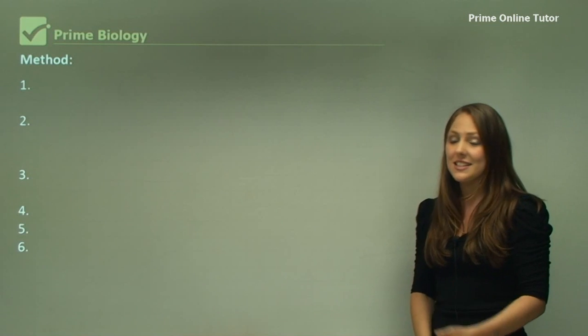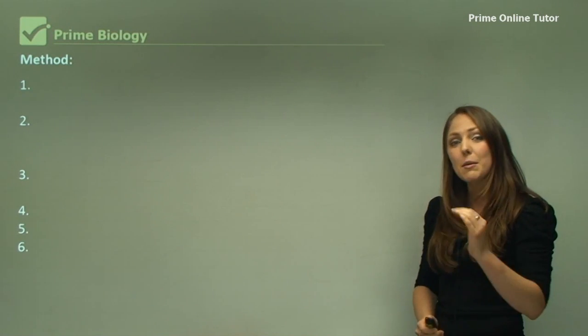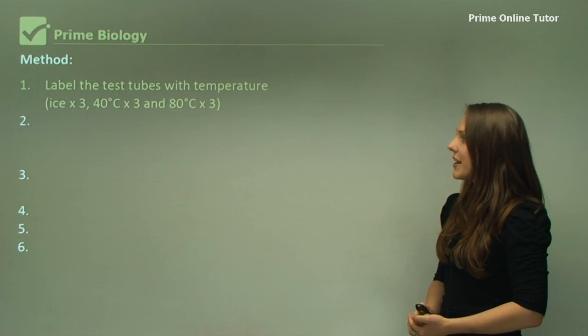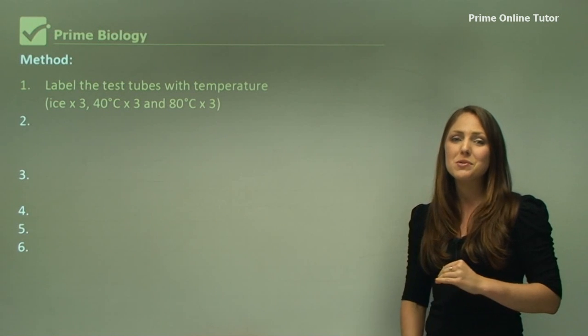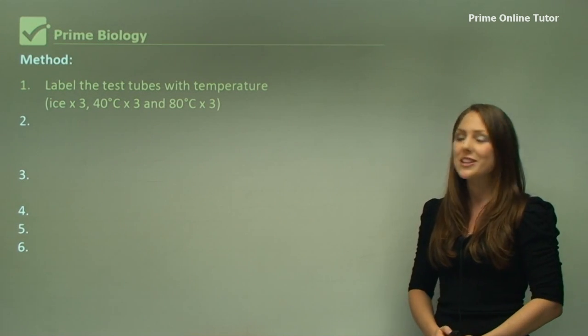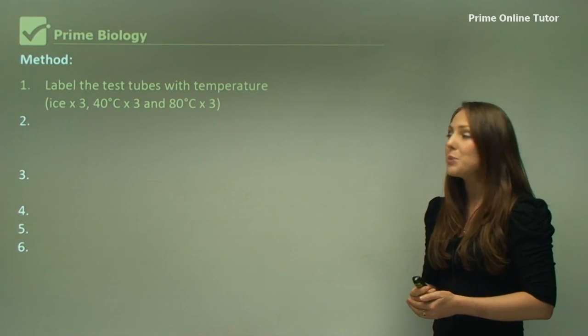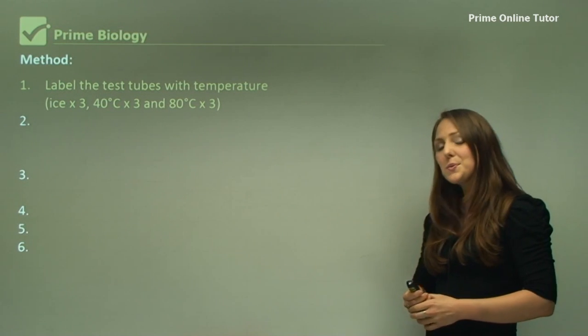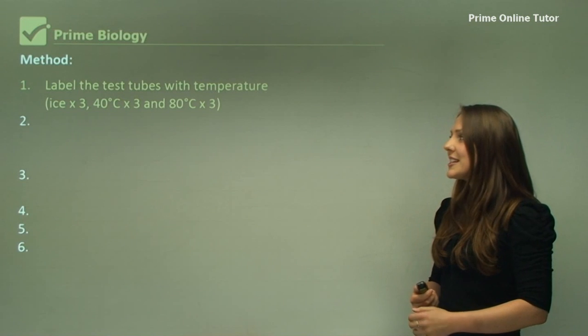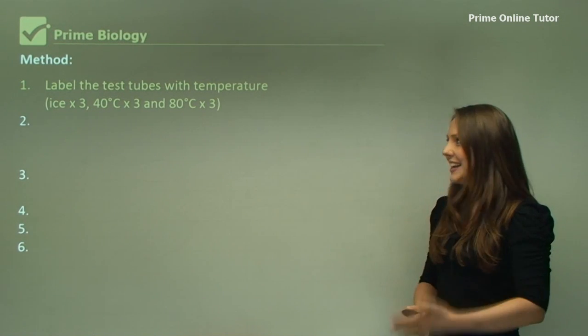Now your method may be written something like this. It needs to be written in steps. You need to label all test tubes first so that you don't get confused during the experiment. For the temperature, you need three test tubes with ice, three test tubes with 40 degrees Celsius, and three test tubes with 80 degrees Celsius.